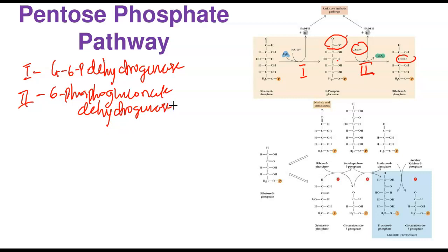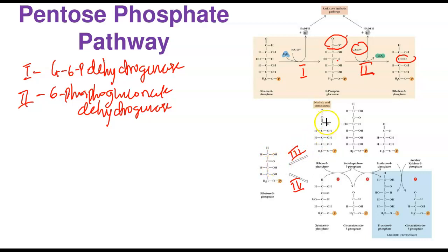These are the two oxidative reactions. The remaining reactions proceed from ribulose-5-phosphate. In step 3, ribulose-5-phosphate is converted to ribose-5-phosphate: the keto group at carbon 2 is shifted to carbon 1, making it an aldose — ribose-5-phosphate is an aldose, while ribulose-5-phosphate is a ketose. The enzyme that does this is called ribose-5-phosphate isomerase.